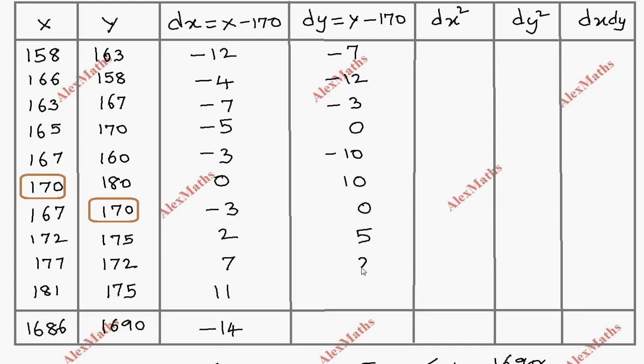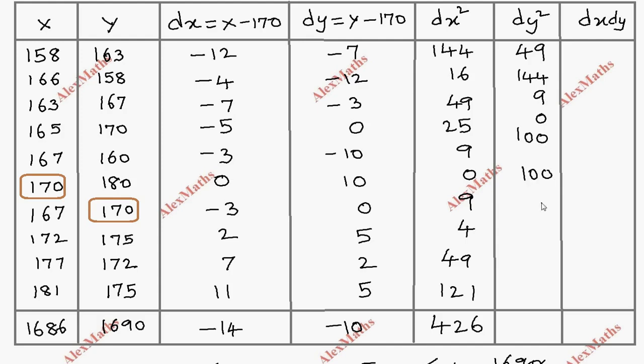Now dx squared: 144, 16, 49, 25, 9, 0, 9, 4, 49, 121. The sum is 426. For dy squared: 49, 144, 9, 0, 100, 100, 0, 25, 4, 25. The sum is 456.